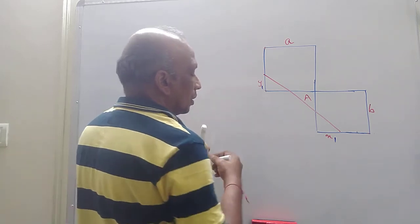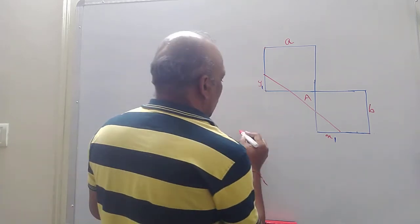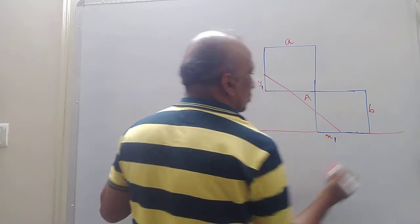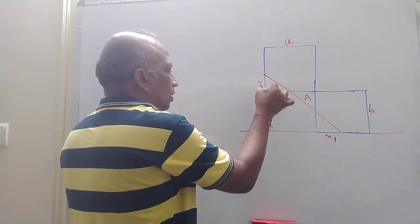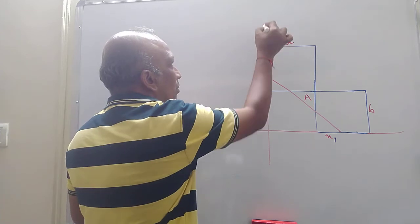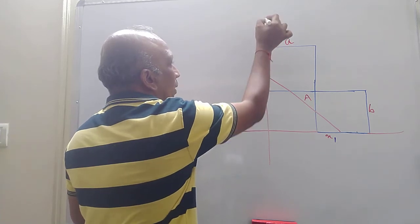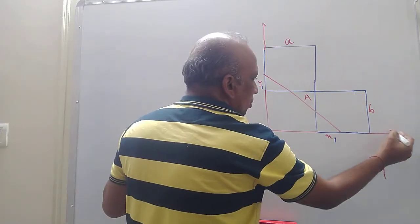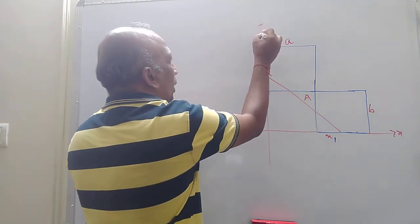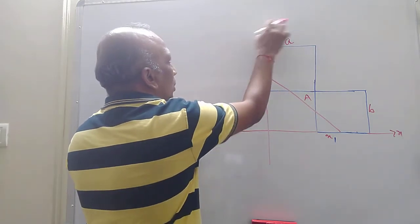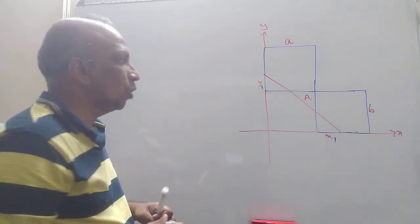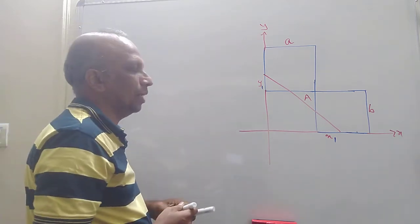I am going to extend this line, and this one I will extend as well. Here also you can extend this line. So let it be — this is the X axis and you can consider this as the Y axis. Now if I take X and Y axis, I have taken this.